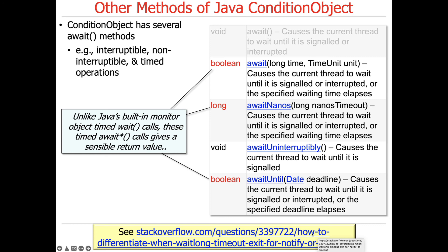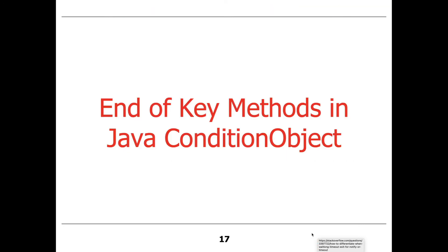So that's the end of the overview of key methods in the Java ConditionObject class.